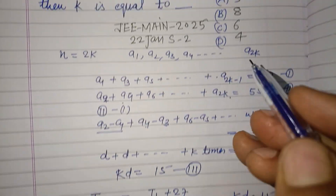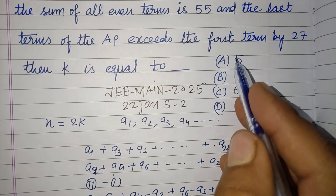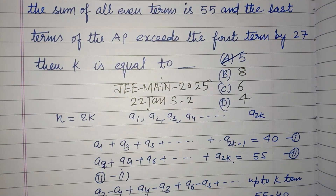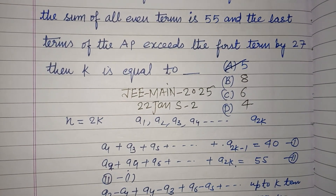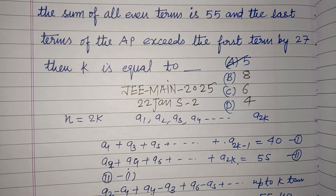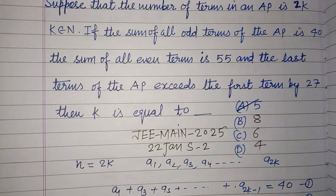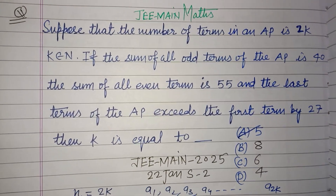Therefore the value of k is 5, which corresponds to option A. Therefore option A is correct. I hope you got it — please like the video, subscribe to the channel. Thanks for watching, see you in the next one.